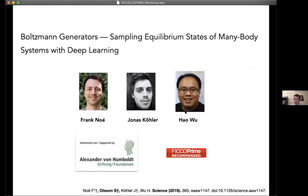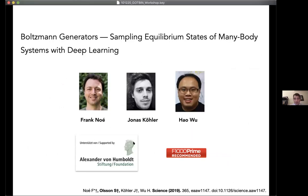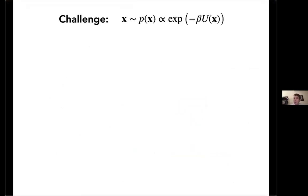The second project is Boltzmann generators, joint work with Frank Noé, Jonas Köhler, and Hao Wu, funded by the Humboldt Foundation and recently highlighted on Faculty 1000. The idea again is the sampling problem: we want to draw samples from a statistical distribution without a normalization constant, defined by a potential energy function u of x — our potential energy model of the molecular system, describing how atoms in a protein interact with each other.